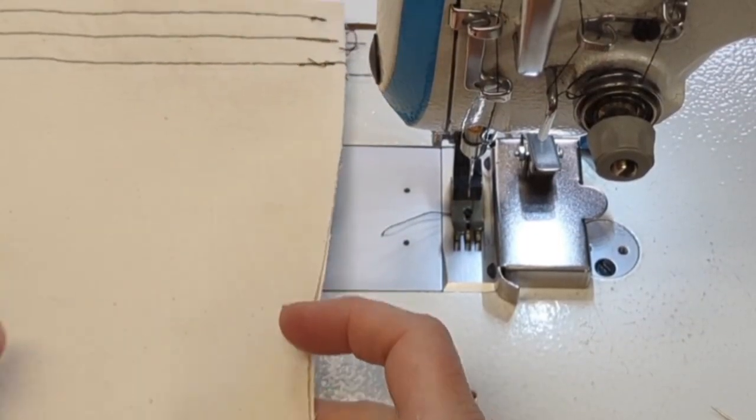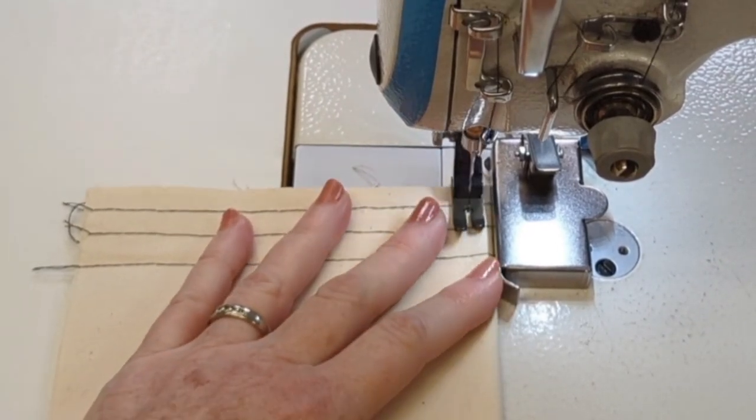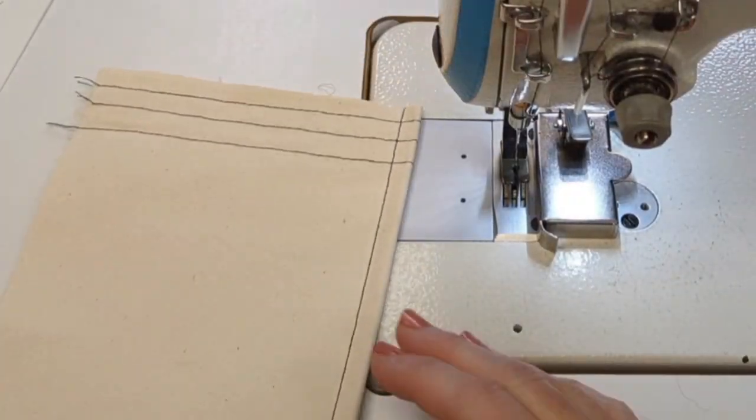Now if I fold my two layers of canvas in half, I've got four, and I'm going to just push that fold up against the magnet. That magnet is super strong. It does not move.